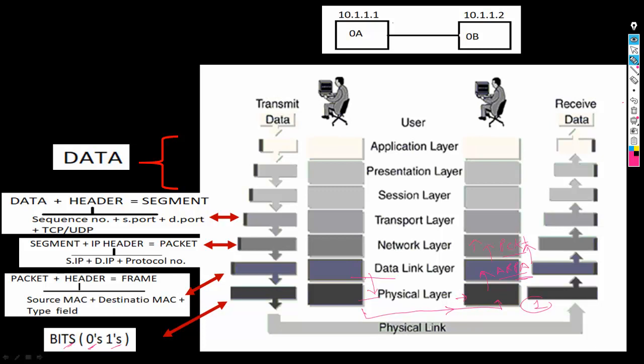The IP protocol will remove its header and check that the destination IP address matches its own, so it will accept the packet. The remaining segment is sent to the transport layer — either TCP or UDP — which rearranges the data based on sequence numbers and passes it to the session layer. The session layer transfers it to the presentation layer, which sends it to the application layer. Machine B has now received the data from Machine A.